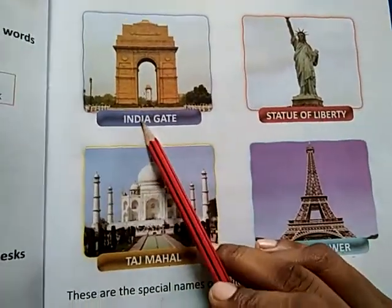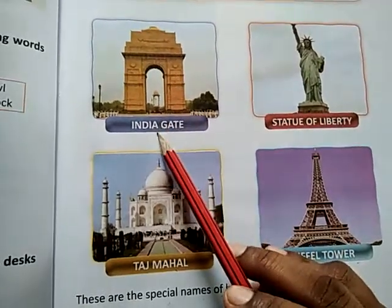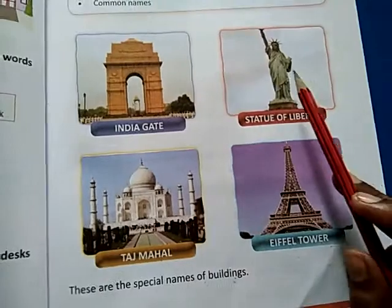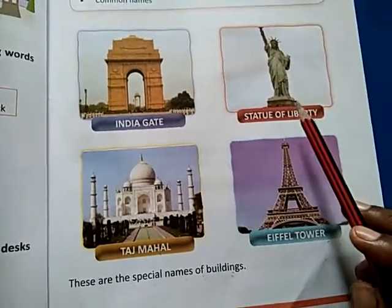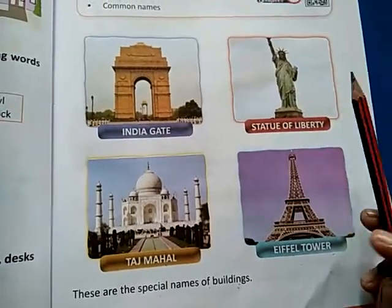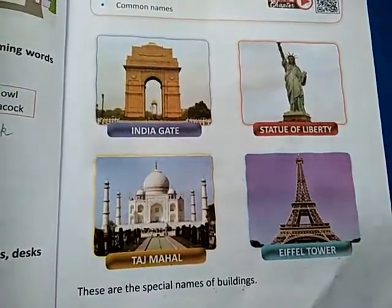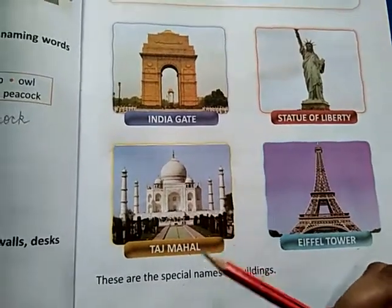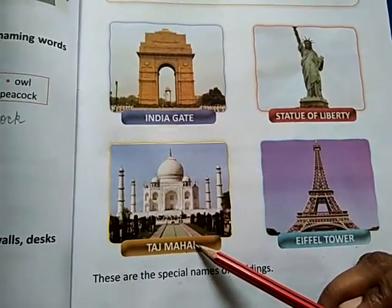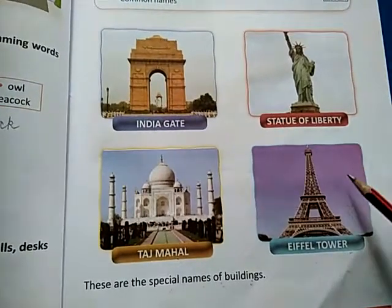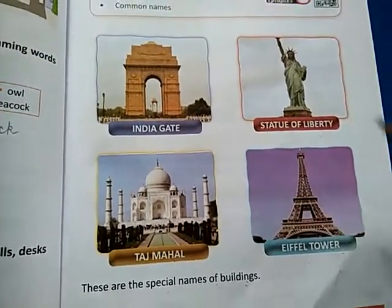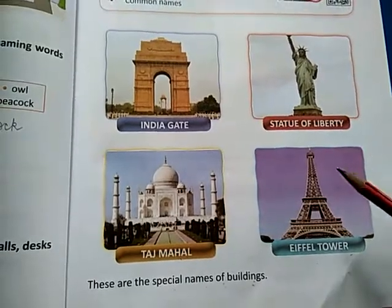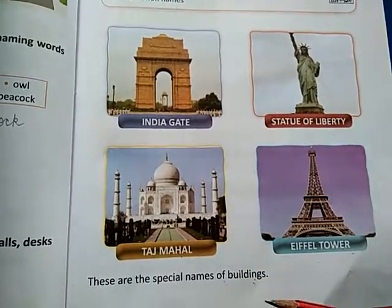Dekho, India Gate — jo aisi building ko India Gate bolte hain, iske jaisa koi aur nahi hai. Statue of Liberty — ye jo statue hai na, Statue of Liberty bolte hain aur iske jaisa koi aur doosra nahi hai. Taj Mahal hai, koi bhi doosra Taj Mahal nahi hai. Eiffel Tower hai, wo special hai, apne aap mein ek hai. To jo apne aap mein ek hota hai aur us khud ki naam se jaana jaata hai, use hum kehte hain special name.